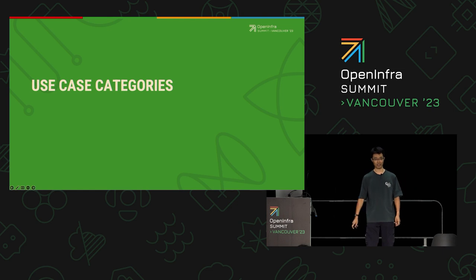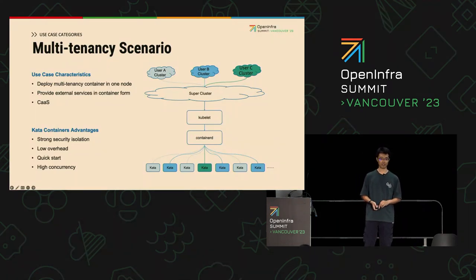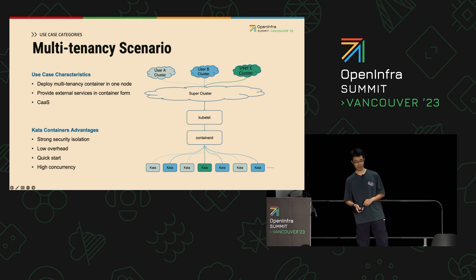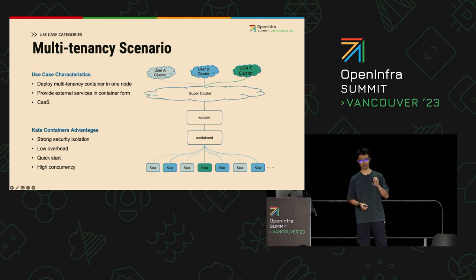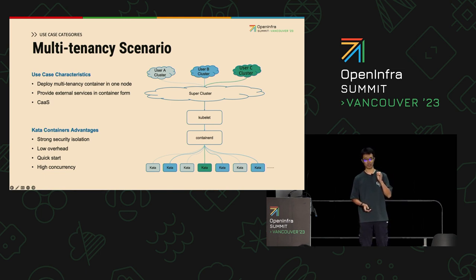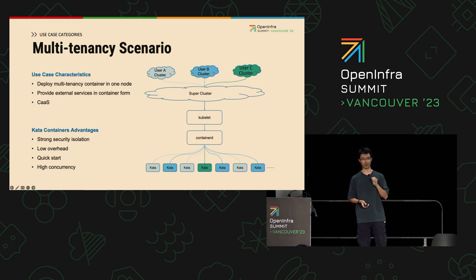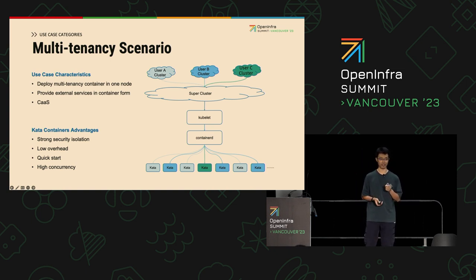Why do we need a new container implementation instead of just using runc? Right now we have two main use cases. The first is the multi-tenancy scenario. For example, if you run a public cloud, you have to run untrusted applications and workloads in your containers. If you are running runc containers, that is not considered secure enough — untrusted code can attack the host. We have seen several CVEs for container breaches, and that's why we need the virtual machine as a second layer of isolation, enabling safe multi-tenancy to run different workloads from different users.